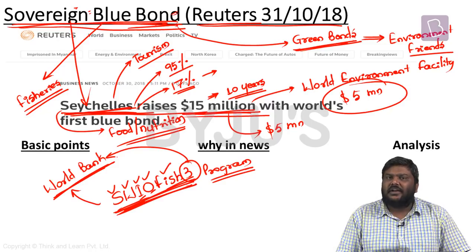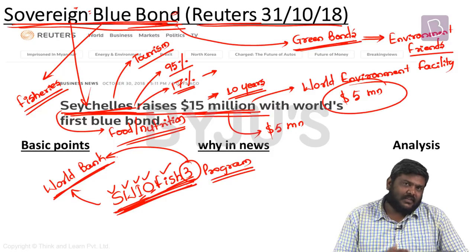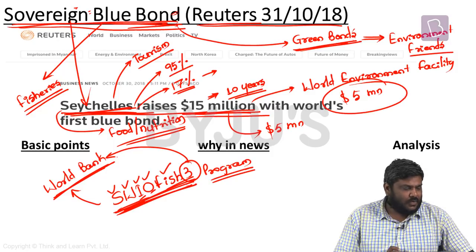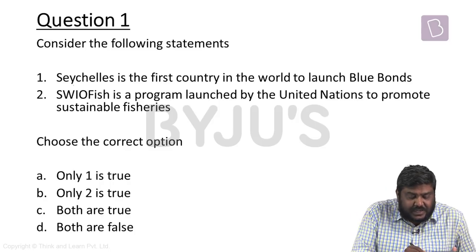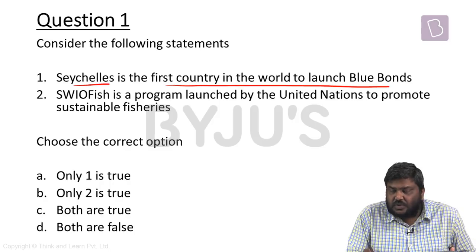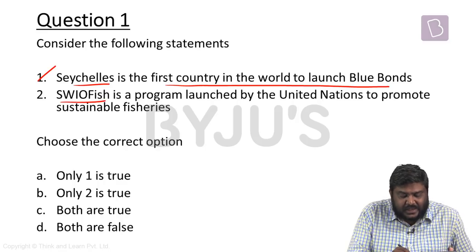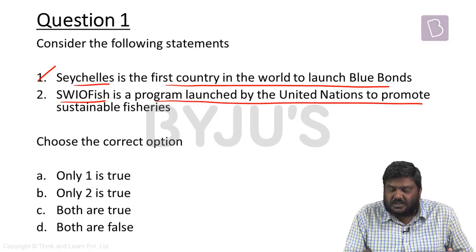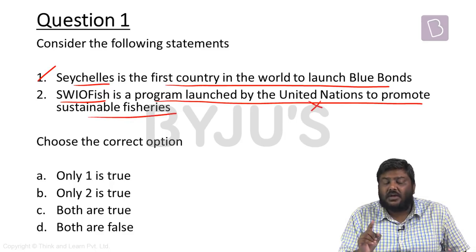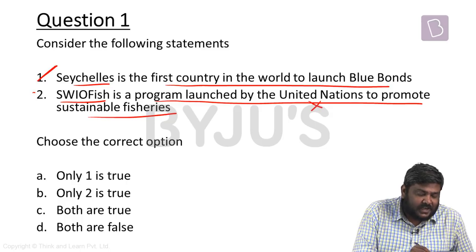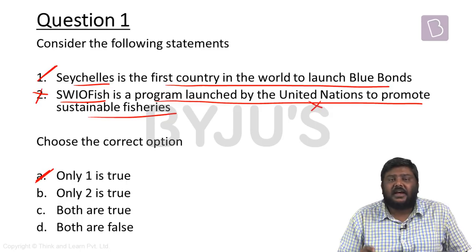Now let's look at the questions. First question: consider the following statements - Seychelles is the first country in the world to launch blue bonds (correct), and SWAYOFISH is a program launched by the United Nations to promote sustainable fisheries (incorrect - it is launched by the World Bank). So the first statement is correct and the second statement is wrong. Option A is the correct option. Second question: which of the following publishes the Global Manufacturing Index? The answer is Option B - World Economic Forum.